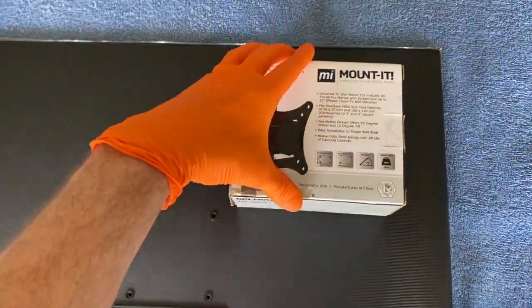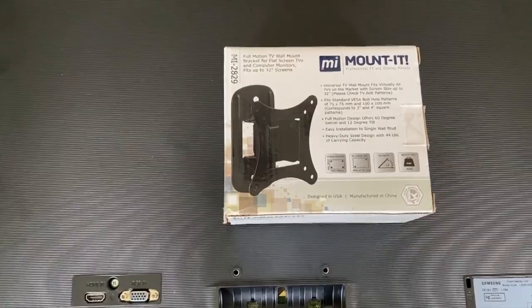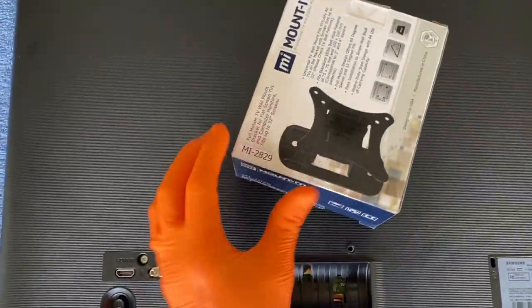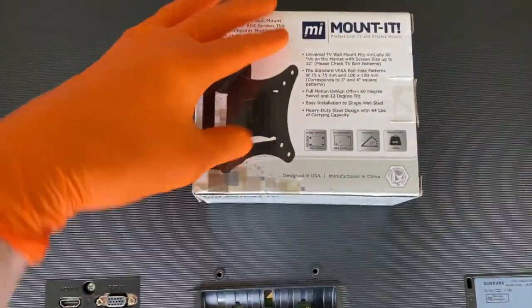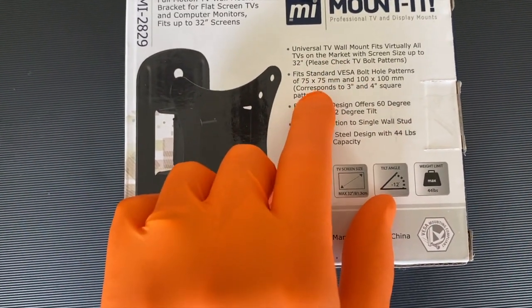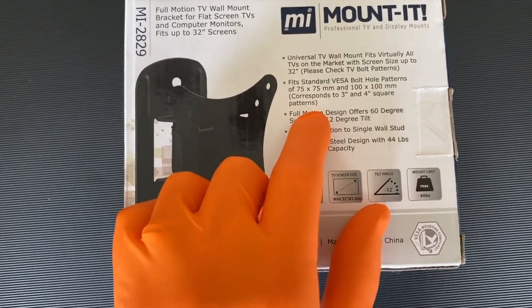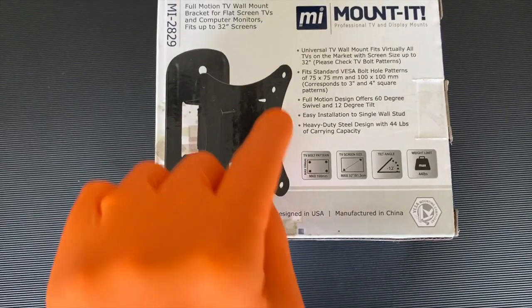However, from here, here is our mount and we bought this on Amazon and it was $12.99. This is a full motion mount. There's the model number here and it fits all of the standard VESA bolt hole patterns of 75 by 75 millimeter and 100 by 100 millimeter, which corresponds to 3 inch and 4 inch square patterns and that's basically this right here.